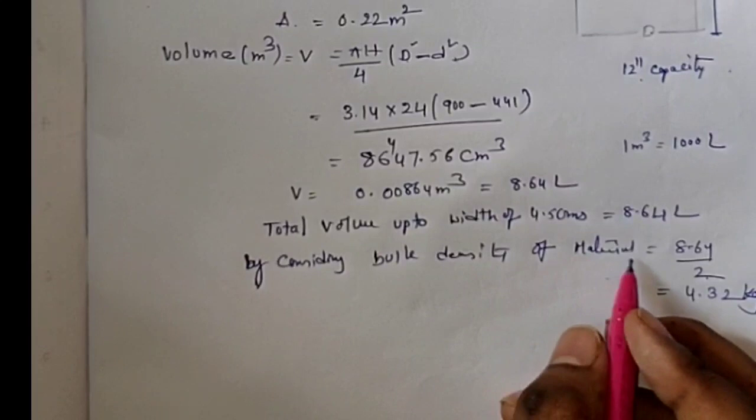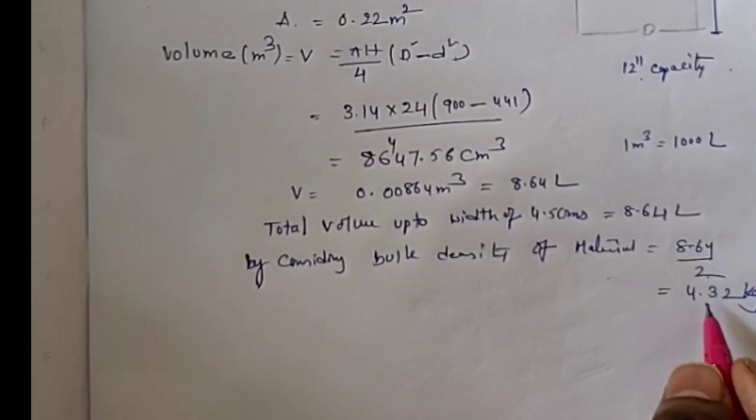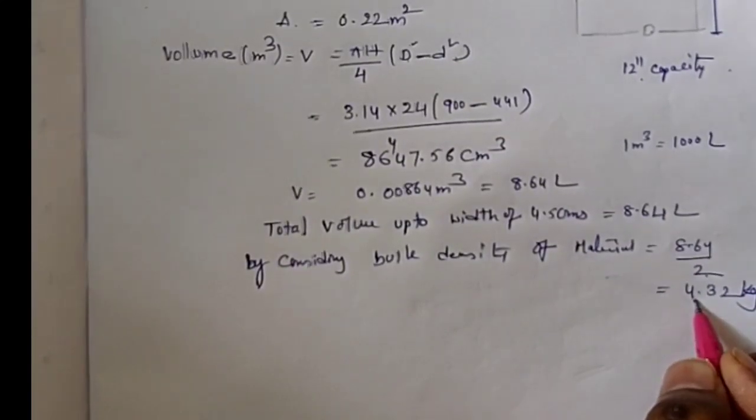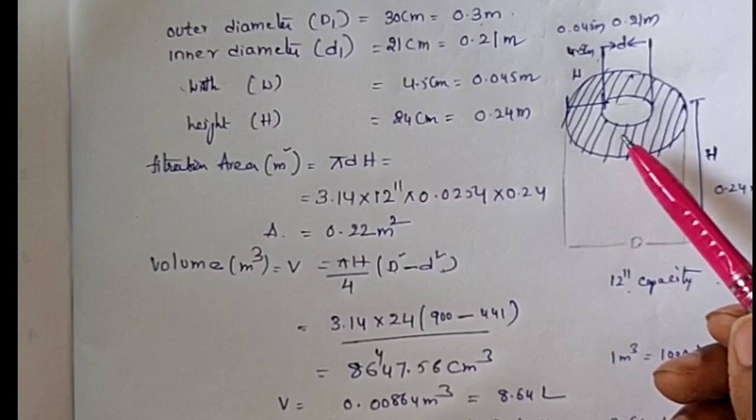By taking the bulk density 0.5, this is the ideal case. This much material of bulk density 0.5 will be held in the centrifuge.